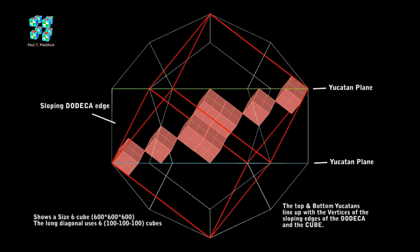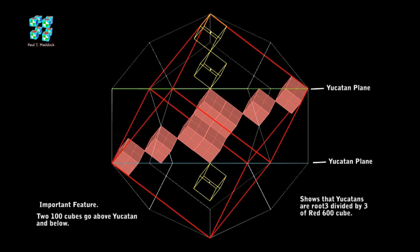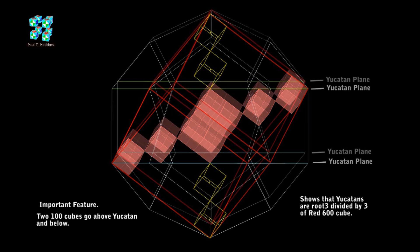In front, I'm showing you a size 6 cube — it's a 600 by 600 by 600. I'm also showing what I call a Yucatan plane, and you can see that they line up with the vertices of the cube and the sloping edges of the Rodeca. I'm using 6 size-100 pink cubes that make up the diagonal, but it only uses 2 cubes between the 2 Yucatans. We can fit another 2 above and 2 below. I think you'll find later on that this is a very important feature.